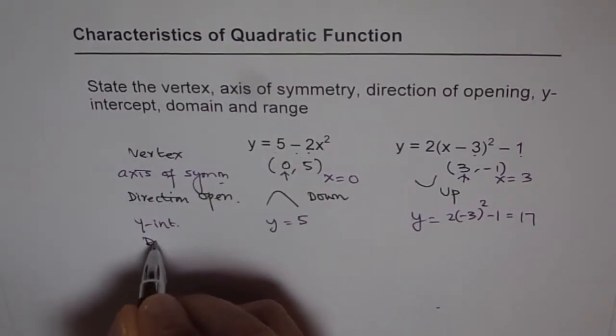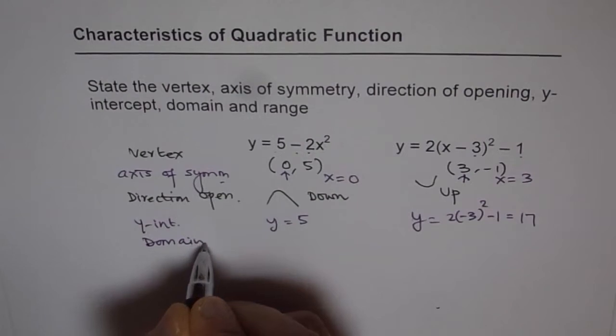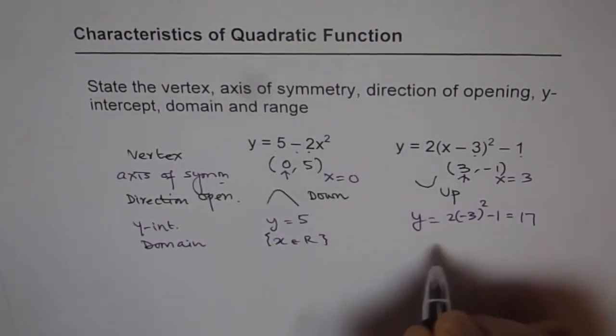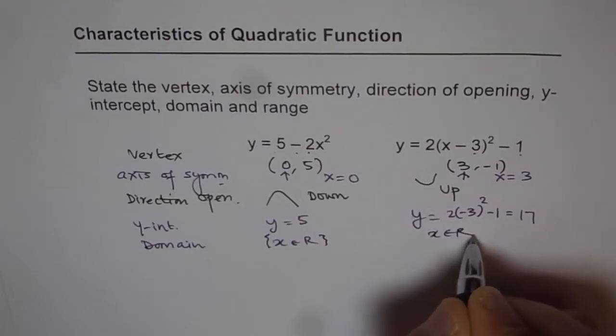Domain and range. Domain for all parabolic functions or quadratic functions is x belongs to real numbers. There are no restrictions on this function.